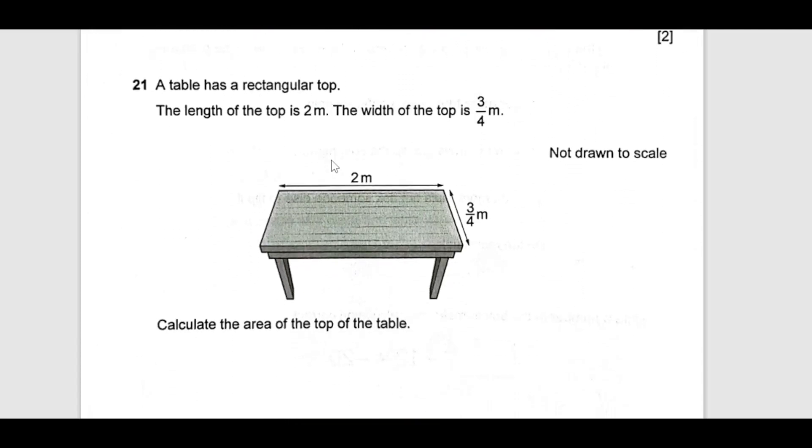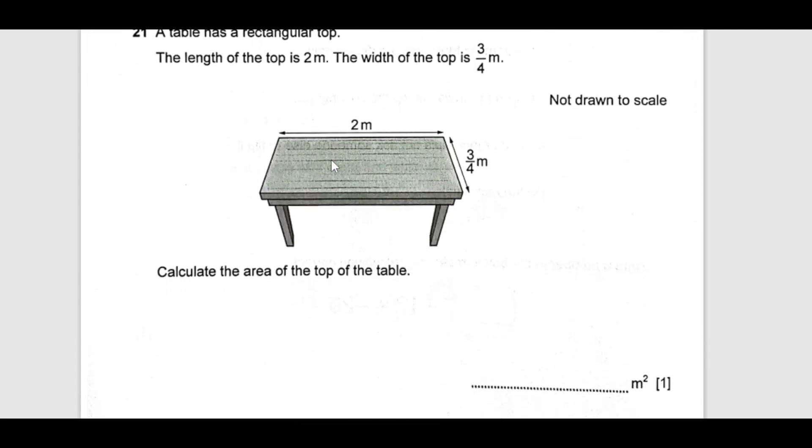Number 21, a table has a rectangular top. The length of the top is 2 meters and the width is 3/4 meters. Calculate the area. Area of a rectangle is length times width, which is 2 times 3/4. So 2 times 3 is 6, divided by 4 is 3/2, which is 1.5 or 1 and 1/2. So this is the area.